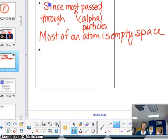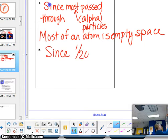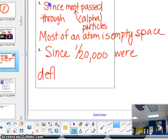However, since 1 in 20,000 were deflected, they must have hit something.